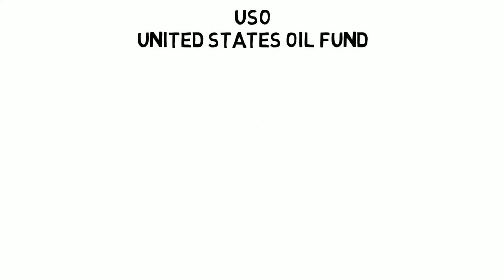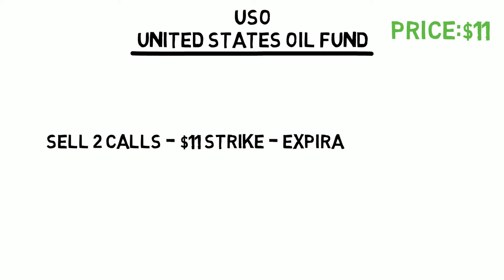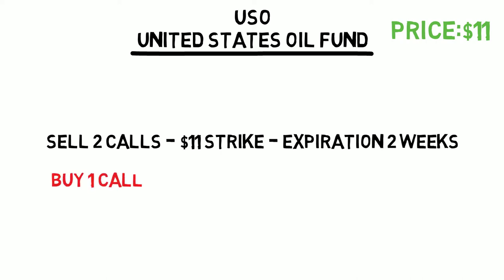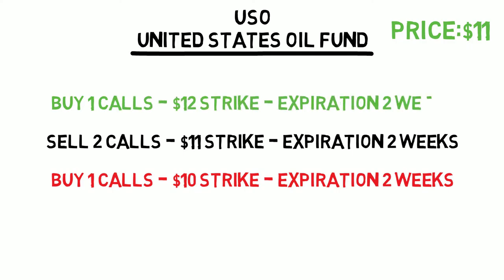As a simple way to help you visualize, let's say we believe stock USO trading at $11 is going to remain at that price for two weeks. To set up a long call butterfly, we would write — aka sell — two option contracts expiring in 14 days with a strike price of $11. This represents our at-the-money portion. We would then buy a call for $10 expiring the same date, representing our lower portion, and finally buy a $12 call also expiring the same date, representing our upper portion.